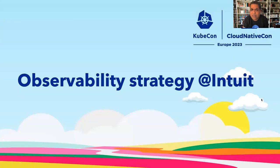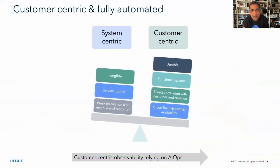One of the principles we started with is that we wanted our observability to focus on how our customers are feeling — what is the customer impact, what is the revenue impact. We wanted to move away from system-centric observability to more customer-centric observability. All our strategy is customer-centric and we rely heavily on AI ops to achieve this.